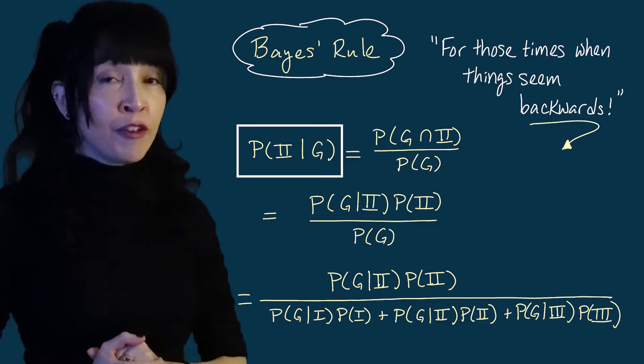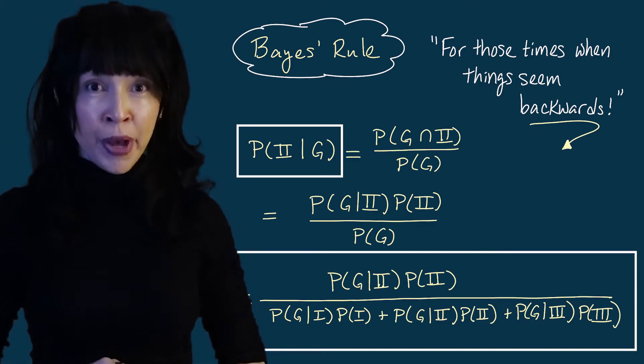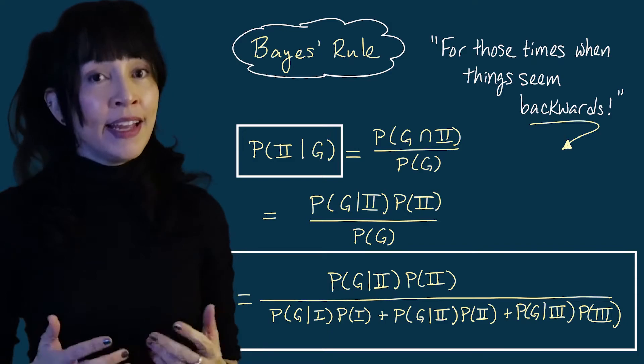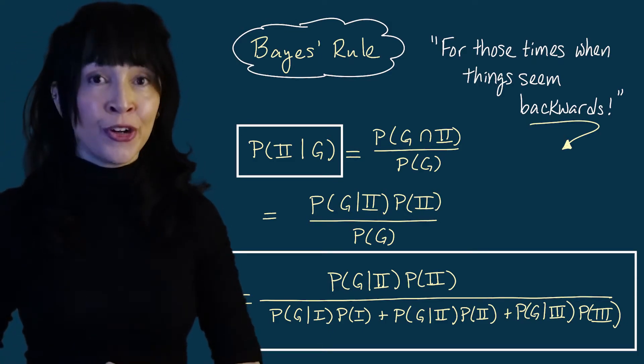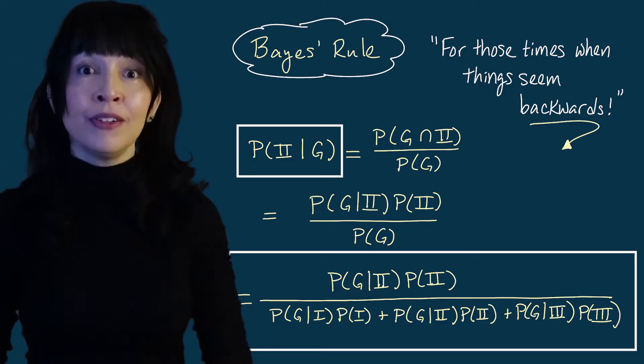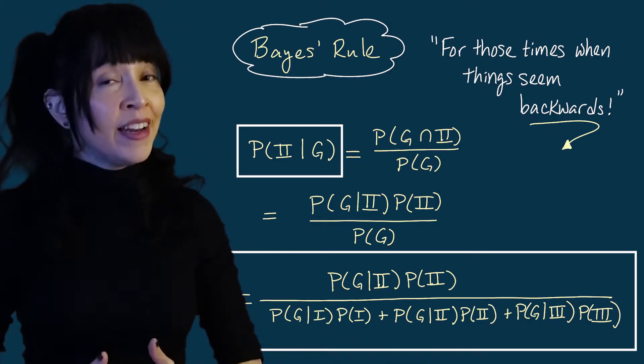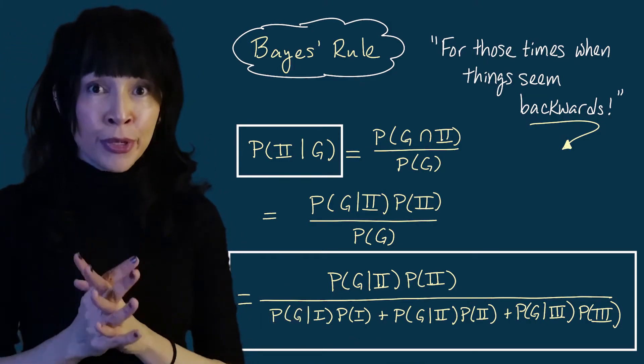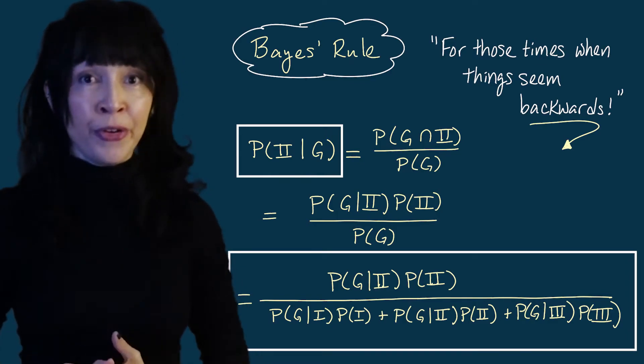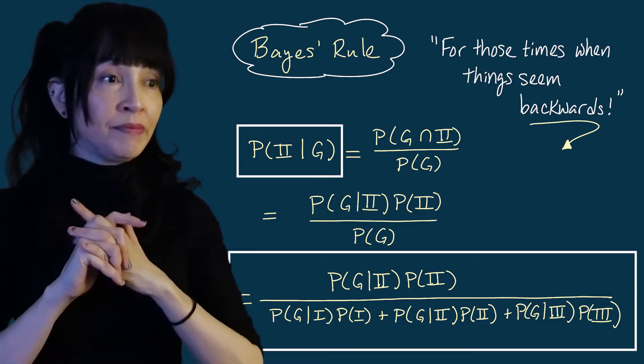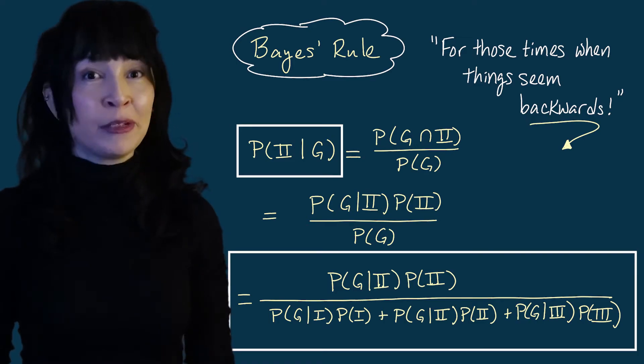This up here from the left side all the way down to the bottom is known as Bayes rule. It's for times when you want to turn a conditional probability around and you can memorize it if you want, but there's a lot going on here and a lot of symbols. So I'd really encourage you to just think about what you're doing and realize that you're just as smart as Bayes.